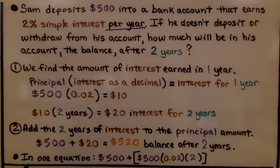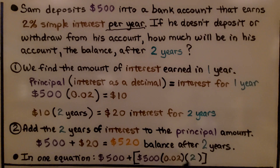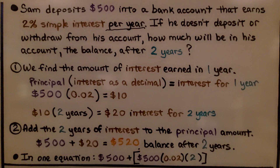We can write this in one equation by putting brackets around $500 multiplied by 2% written as a decimal, multiplied by the two years, then add the original $500 principal. I used brackets because I was already using parentheses to show multiplication. We do inside the brackets first, according to the order of operations.